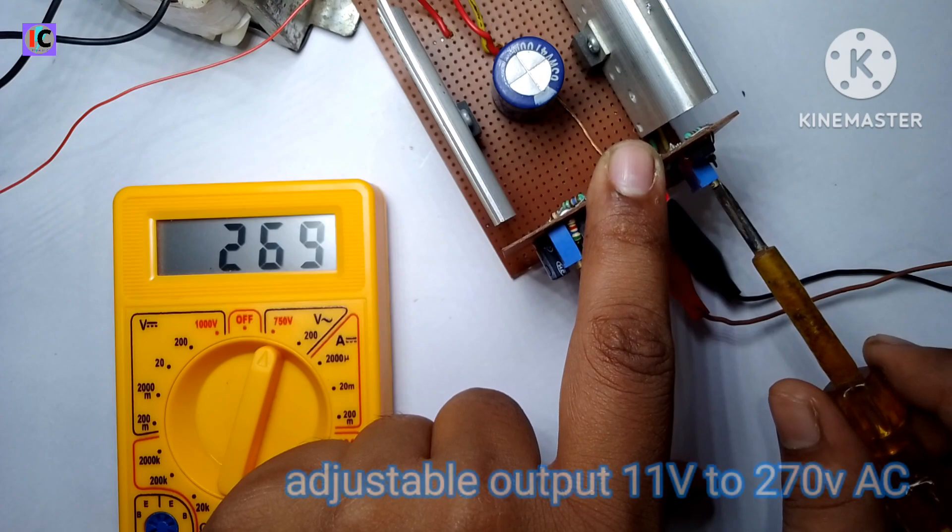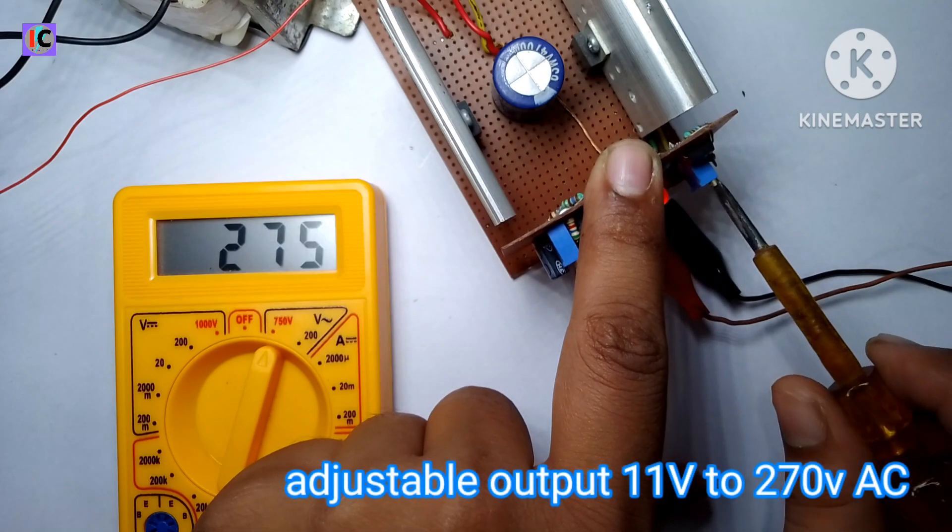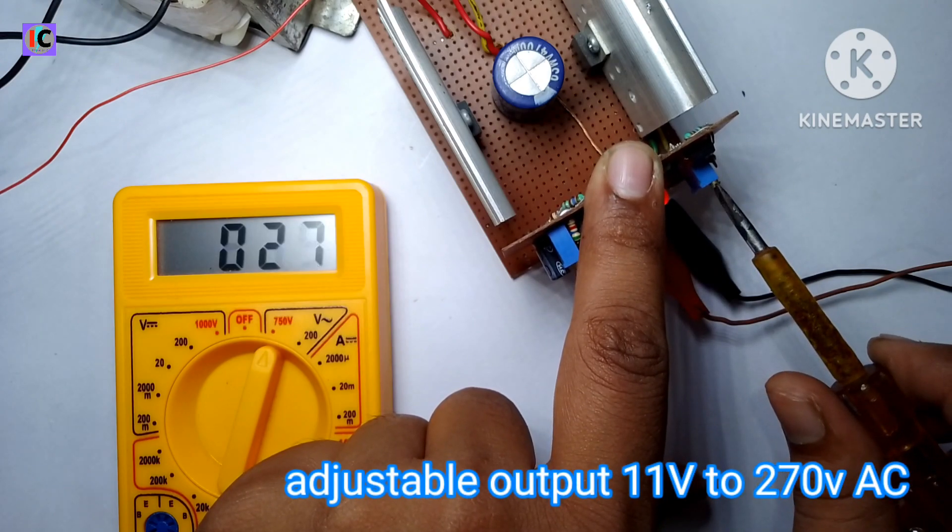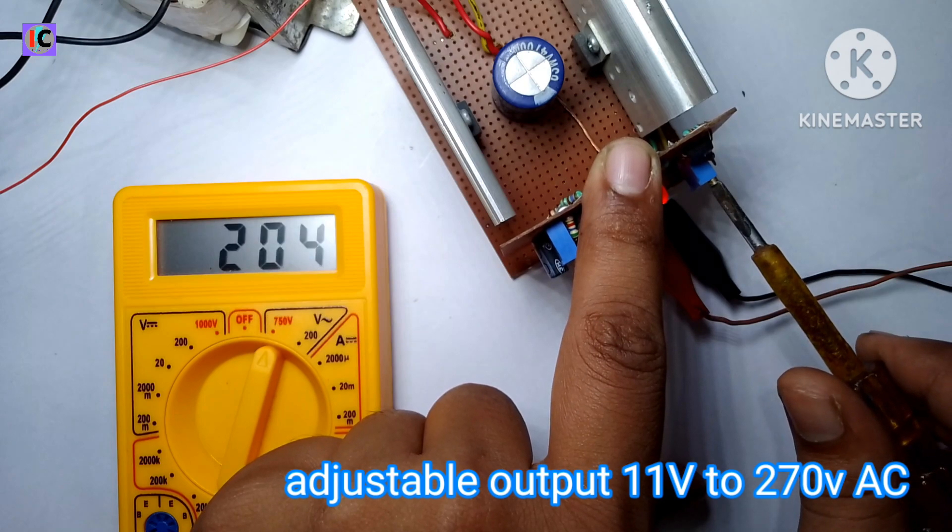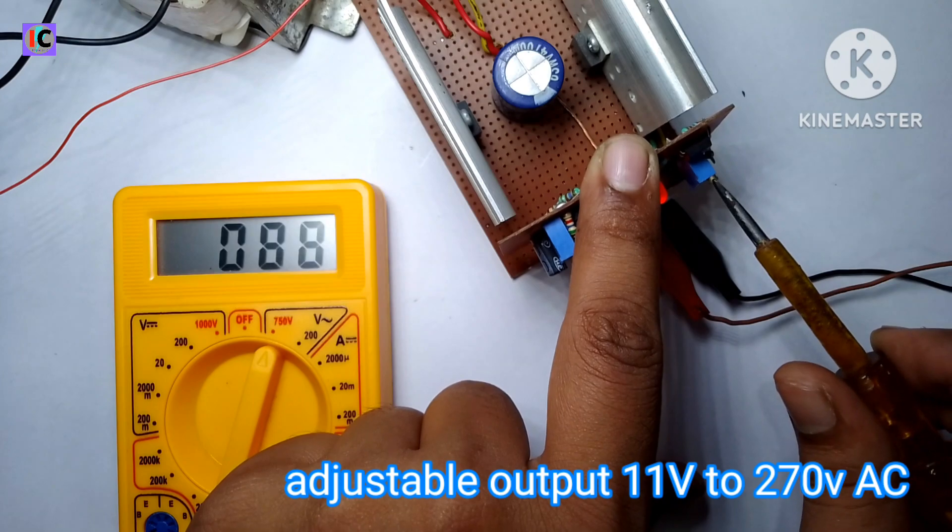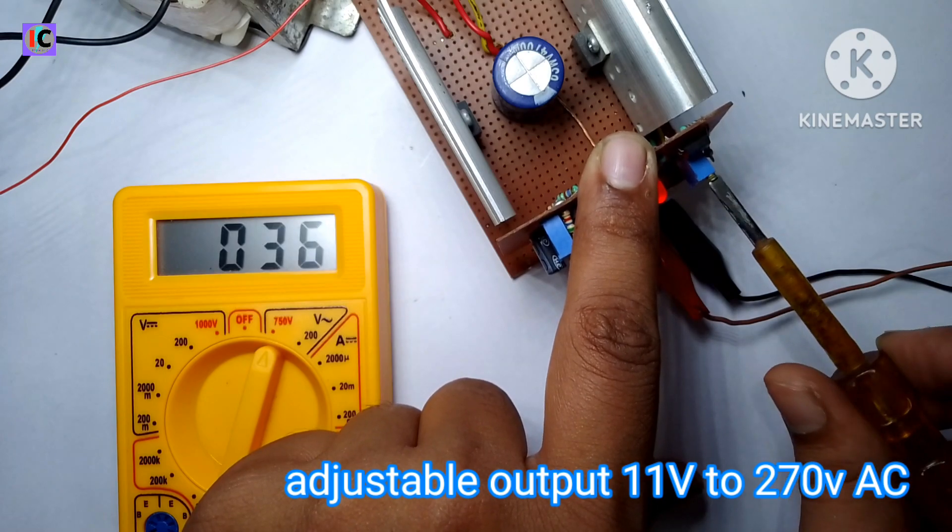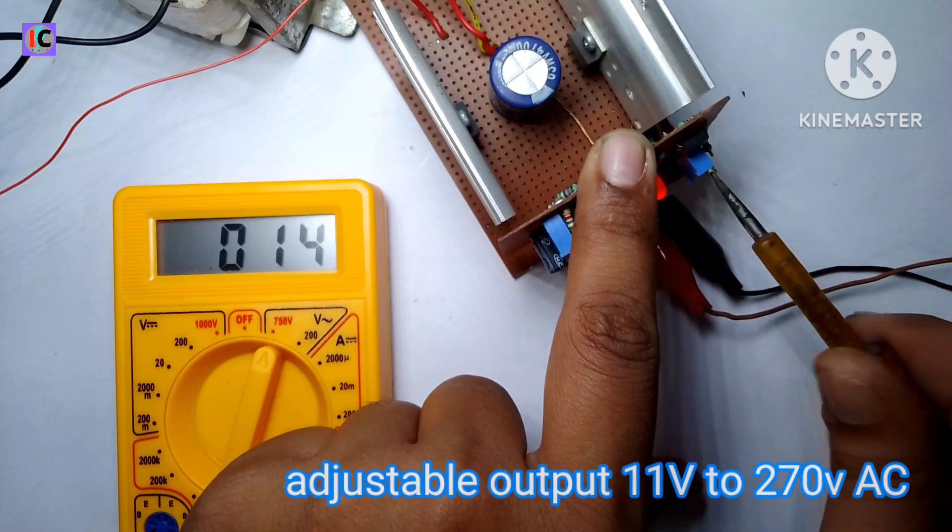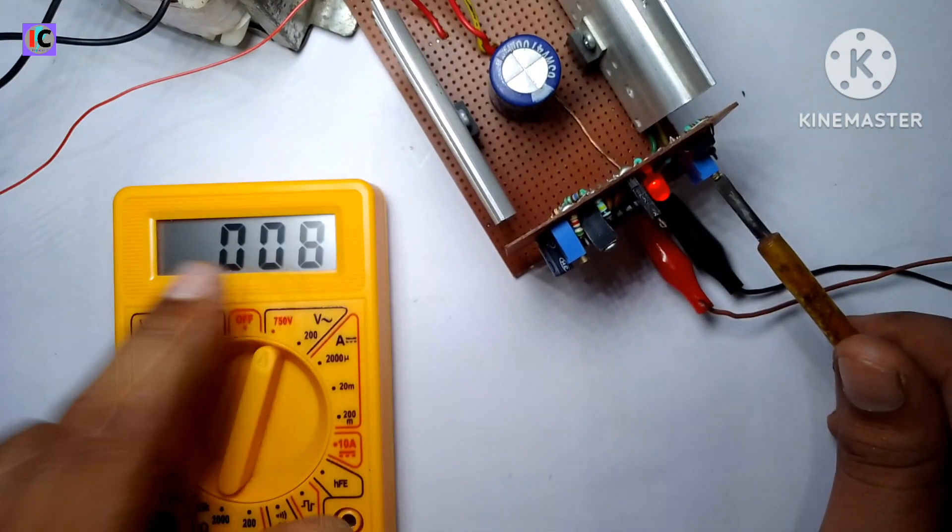By using the preset on the module, you can adjust the voltage from 10 volt AC up to 270 volt AC. As you can see in the multimeter, the voltage is dropping very smoothly and it goes down to 9 volt or 7 volt AC.